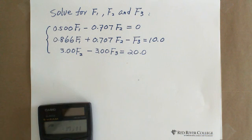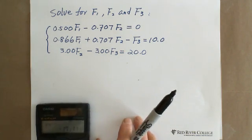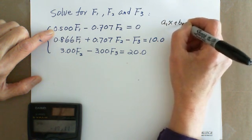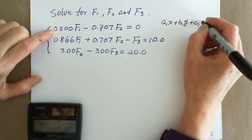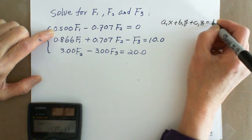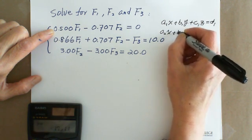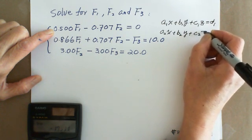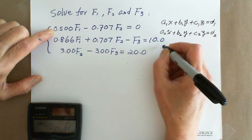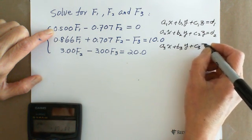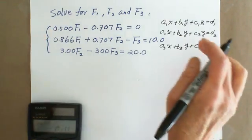The one thing you need to be careful with, since this is the standard form of three linear system equations: A1X plus B1Y plus C1Z equals D1, the second one is A2X plus B2Y plus C2Z equals D2, and the third one is A3X plus B3Y plus C3Z equals D3. Follow this standard form.